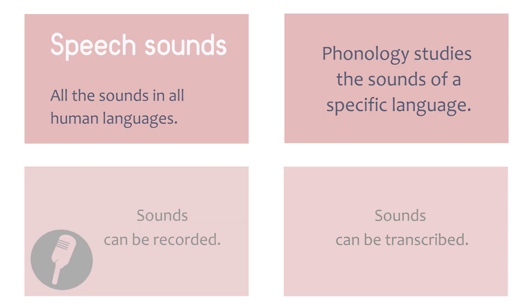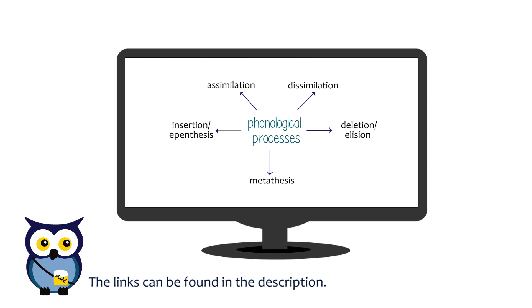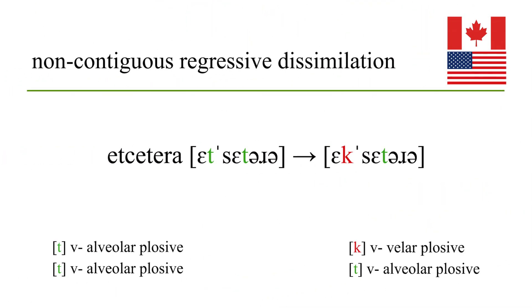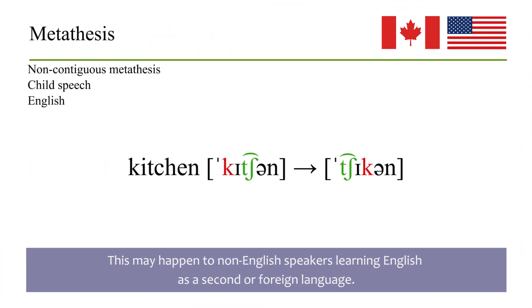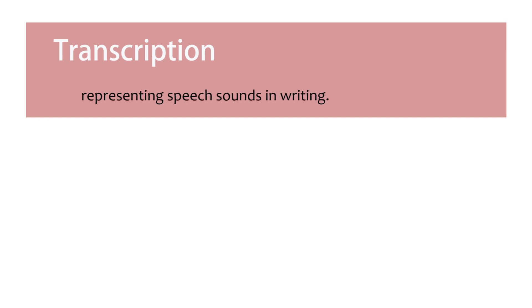So far we have covered basic phonetics and phonology, and we have covered basic phonological processes. We know why sound changes happen — assimilation, dissimilation, or metathesis. But now we need to be able to transcribe sounds and talk about them.